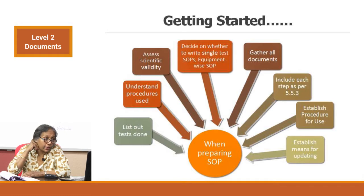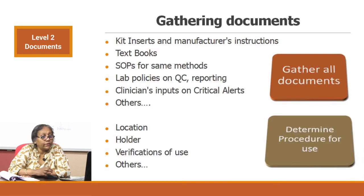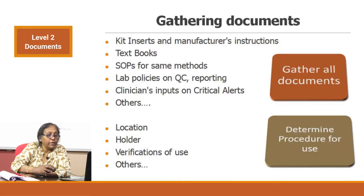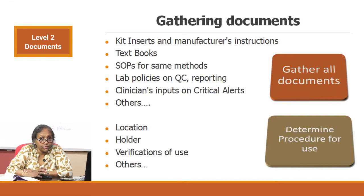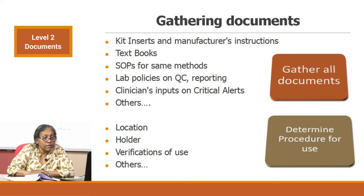Once a year is mandatory that you review your SOP for NABL accreditation — every SOP has to be reviewed every year. Now, regarding gathering all documents: the documents required for writing your SOP include your kit inserts, manufacturer's instructions, textbooks, other SOPs of the same methods — ensuring they are valid for your method — lab policies on quality control, lab policies on reporting, clinicians' inputs on critical alerts, and any other relevant documents.